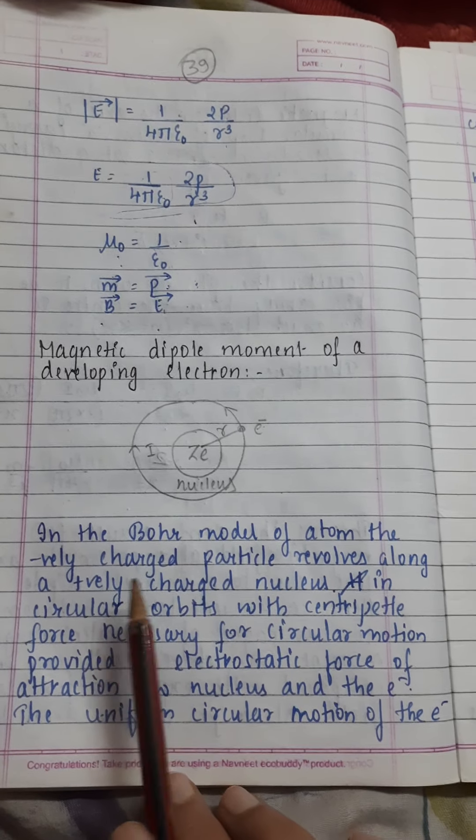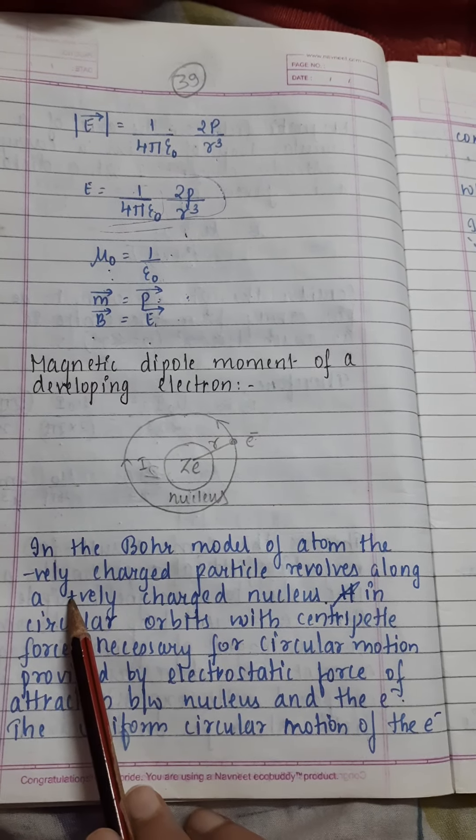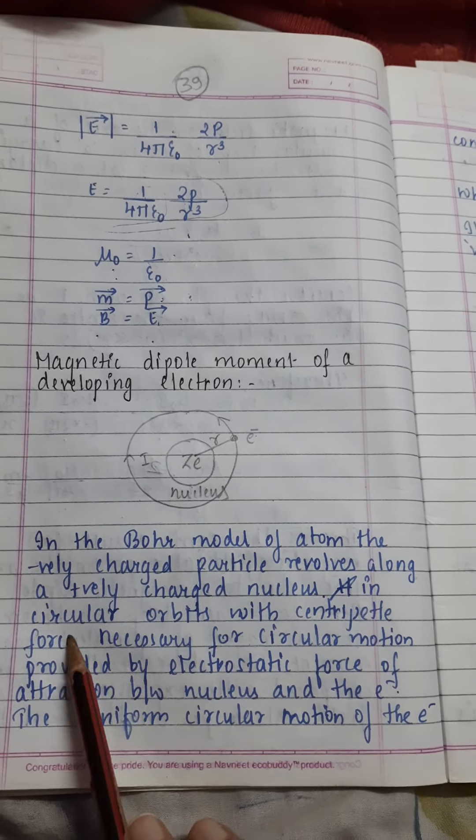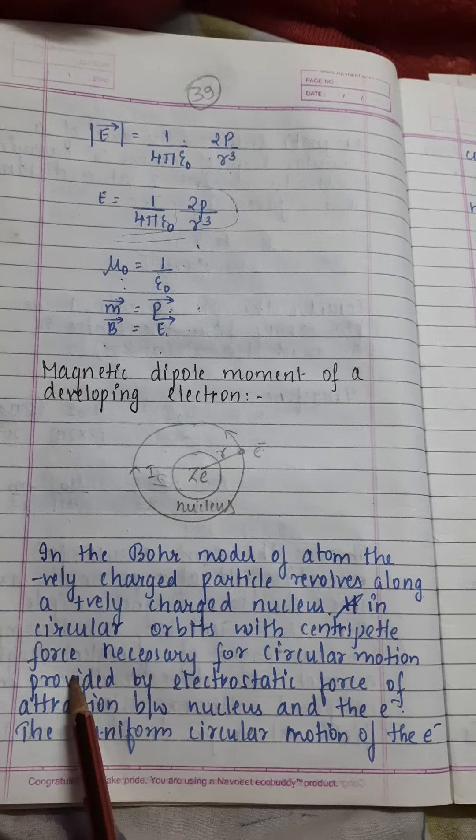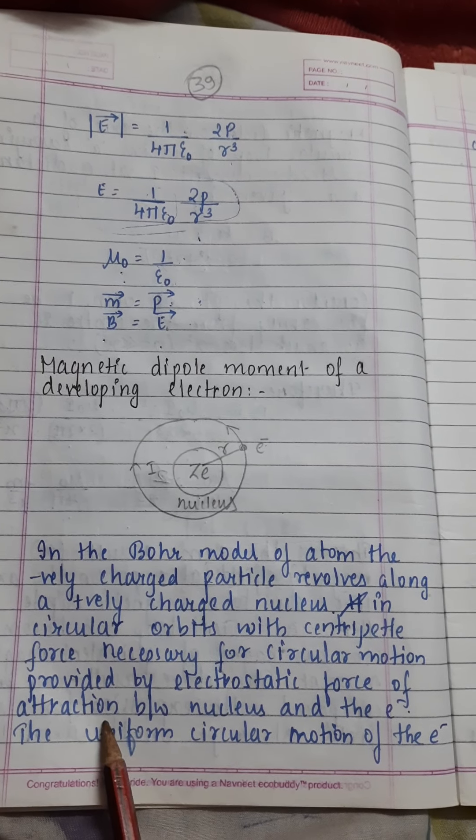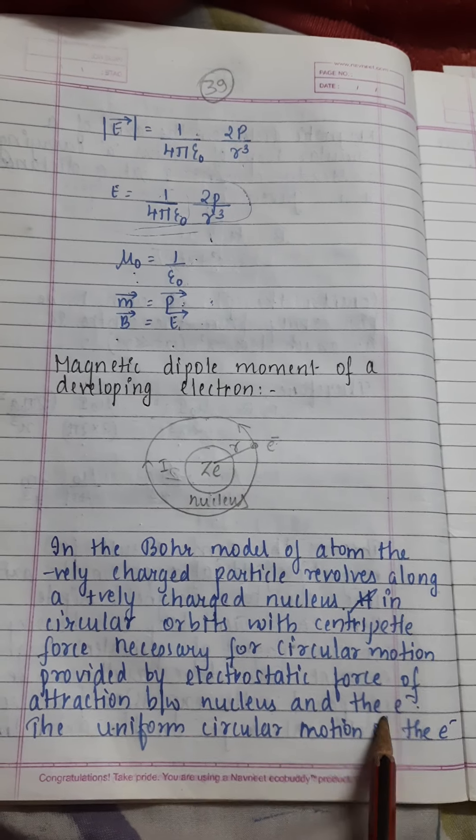Here we will study the Bohr model of atom first. In the Bohr model of atom, the negatively charged particle revolves along a positively charged nucleus in circular orbits, with centripetal force necessary for circular motion provided by electrostatic force of attraction between nucleus and the electron.